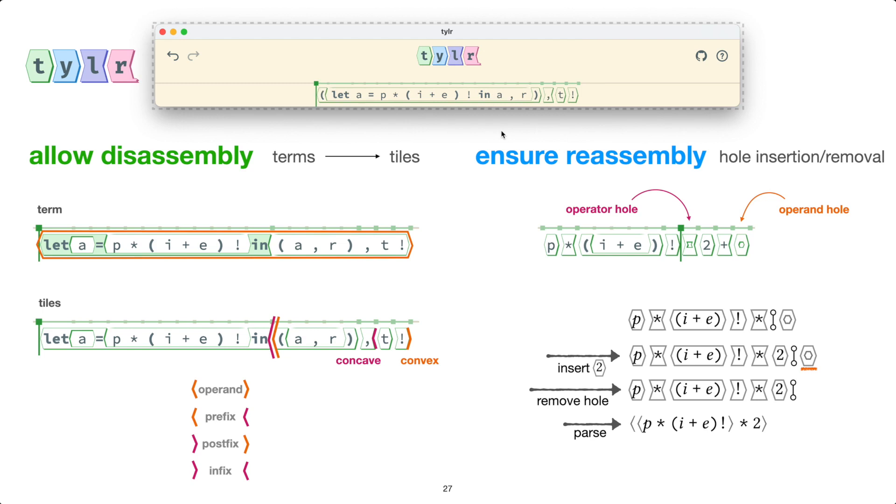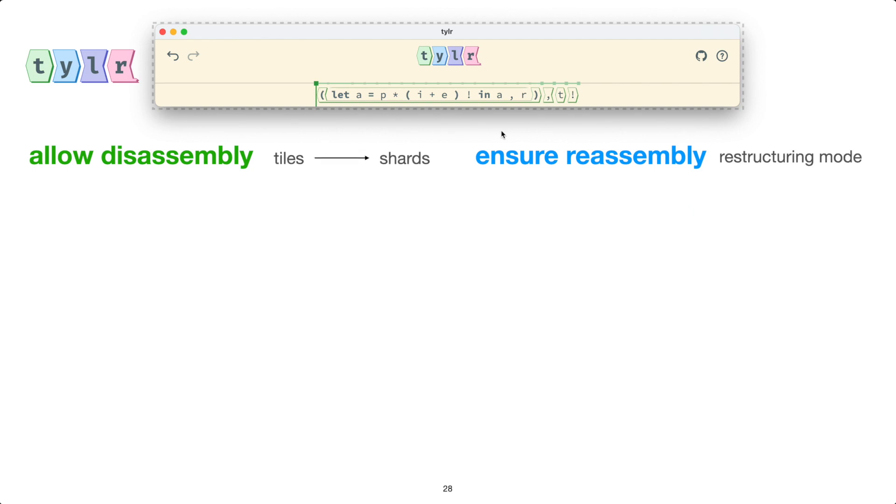Now, Tyler supports a similar workflow by which I can select. Oops. So what we're seeing here is that Tyler supports not only disassembly from terms to tiles, but also tiles into these smaller components called shards. And along the way, in this editing mode that we just entered, which is called restructuring mode, Tyler makes sure that we put down the tiles and shards we picked up in reasonable positions.